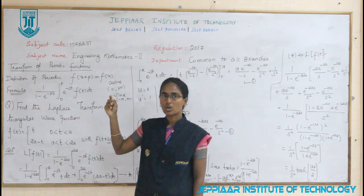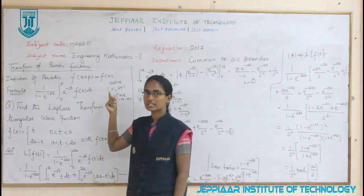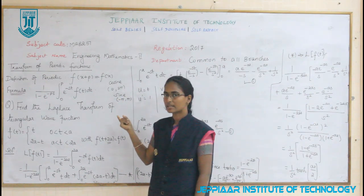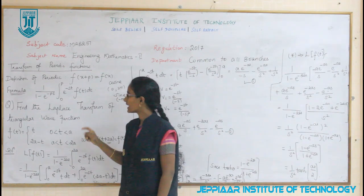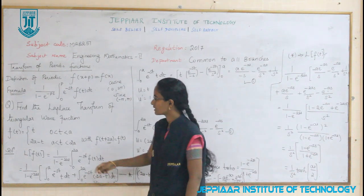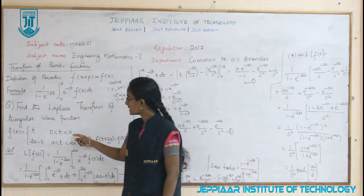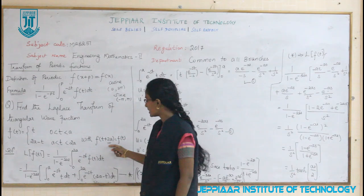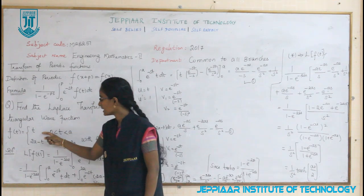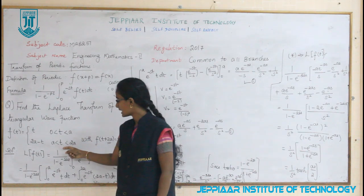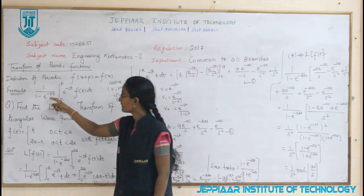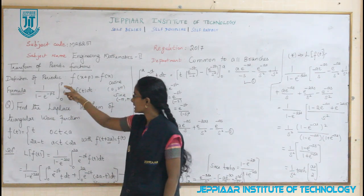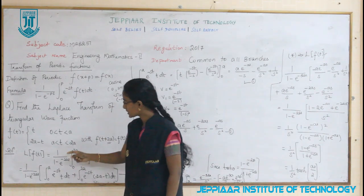We have some examples: the cosine function on interval 0 to 2π with period 2π, and the cosine wave from −π to +π. Now let's see the problem: find the Laplace transform of the triangular wave function defined as t on interval 0 to a, and 2a − t on interval a to 2a, with period 2a. We have the formula with p as the period 2a, so let's substitute.